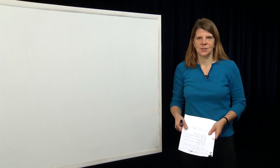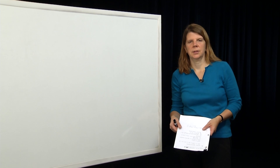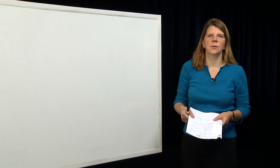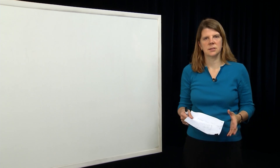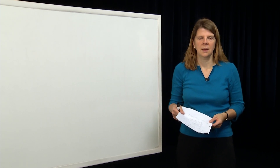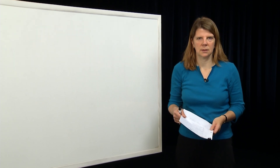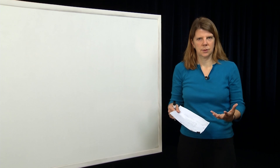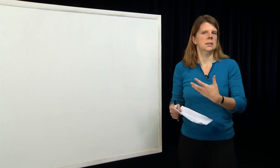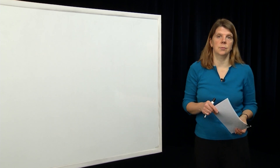Hi, everyone. My name is Claire Tomlin. I'm a professor of electrical engineering and computer sciences at Berkeley, and this is the 17th module in a series that we're recording to support the class EECS 221A, Linear System Theory at Berkeley. In this module, we're going to introduce a linear time-varying system, its notation, and discuss it in the context of dynamical systems we've been introducing over the past couple of modules.